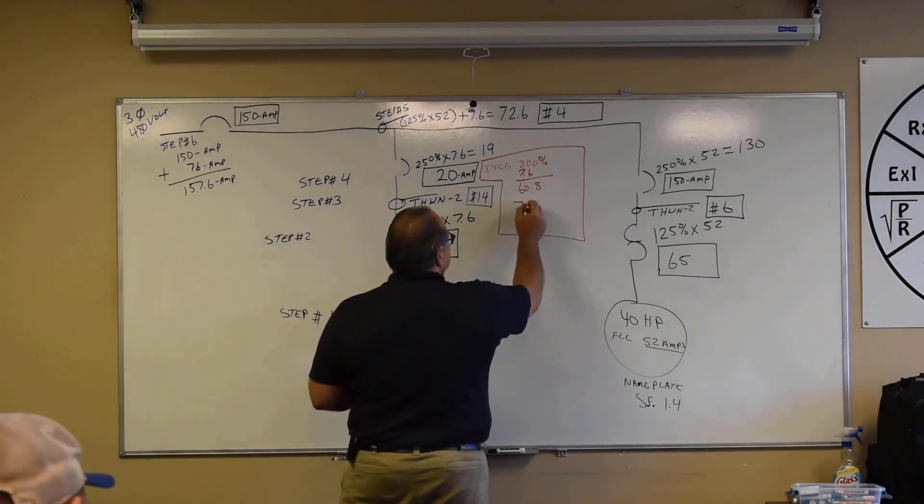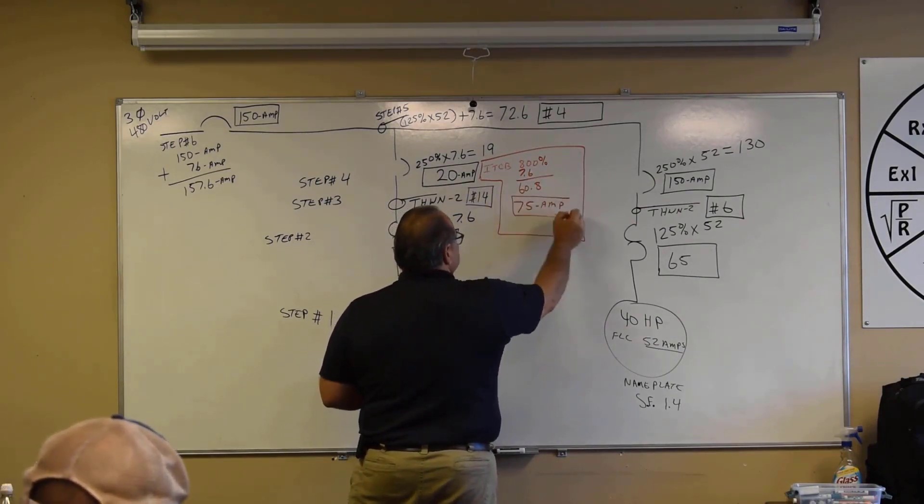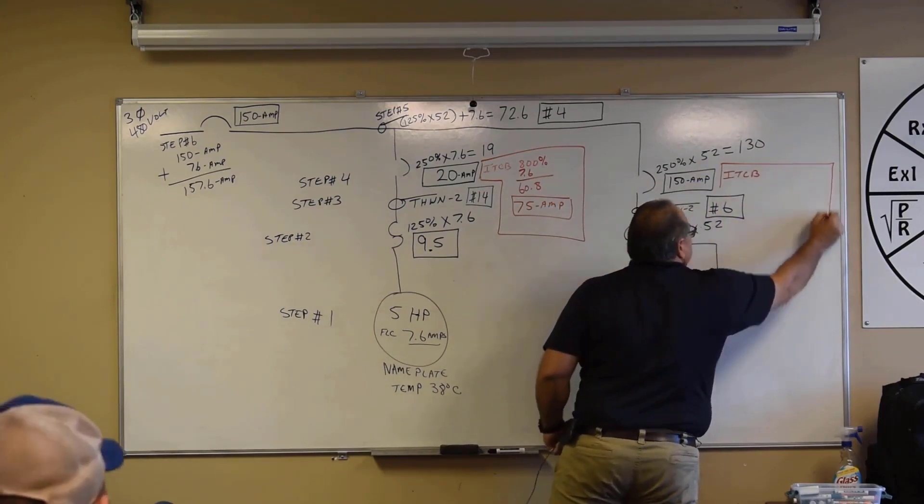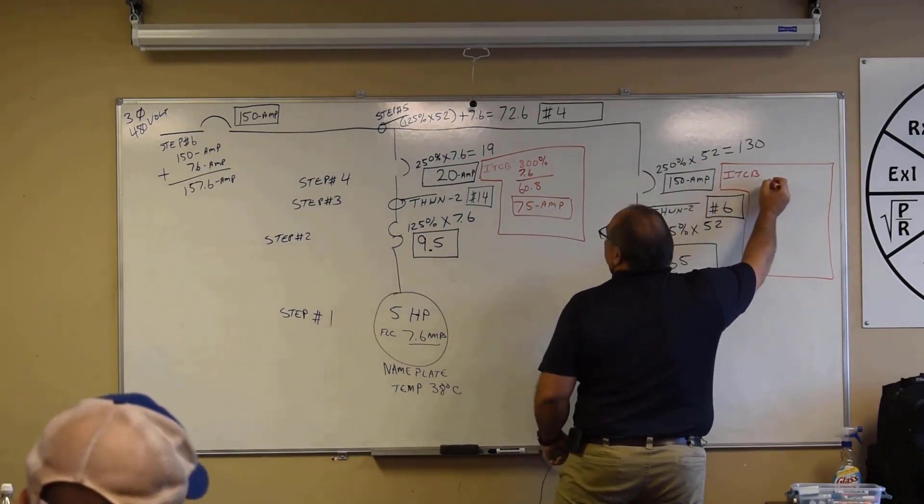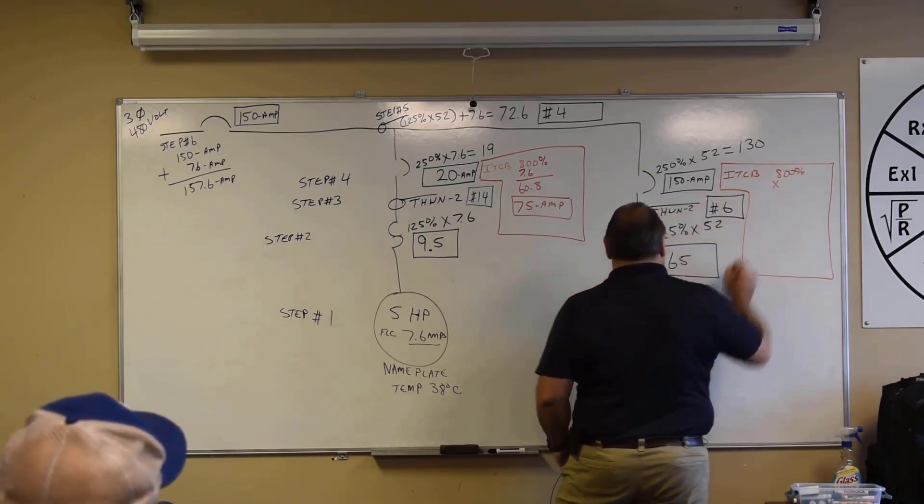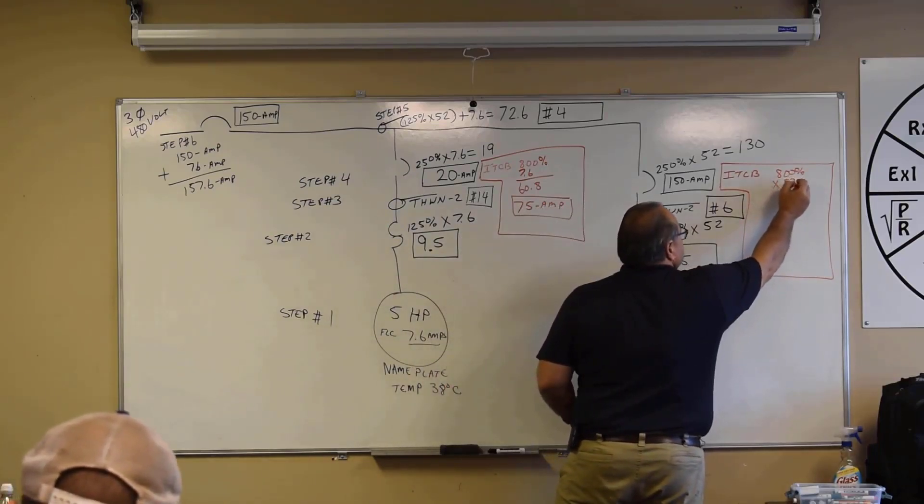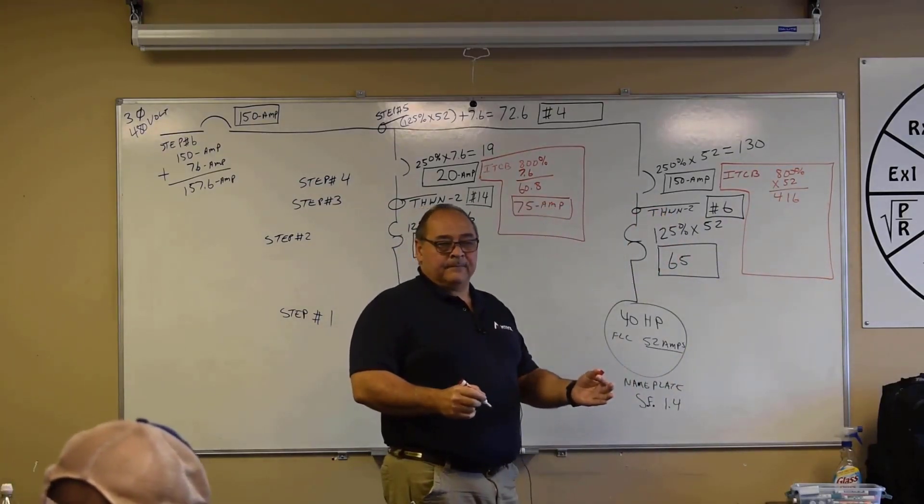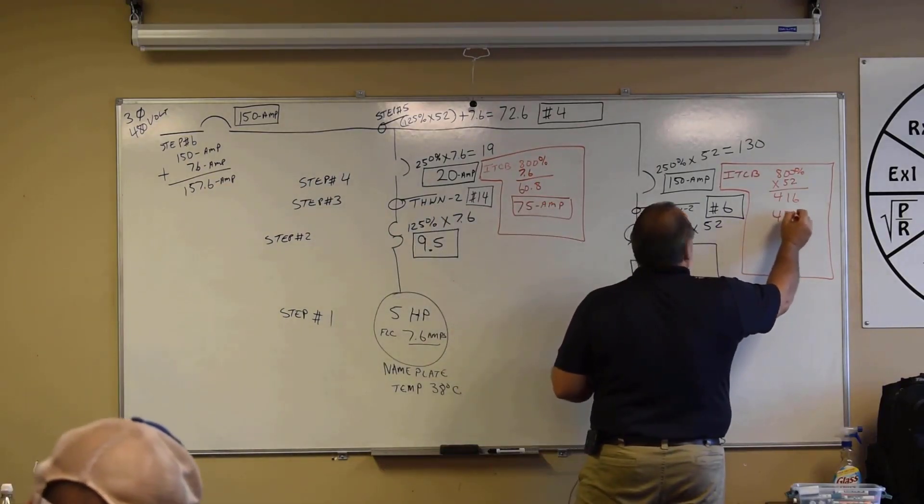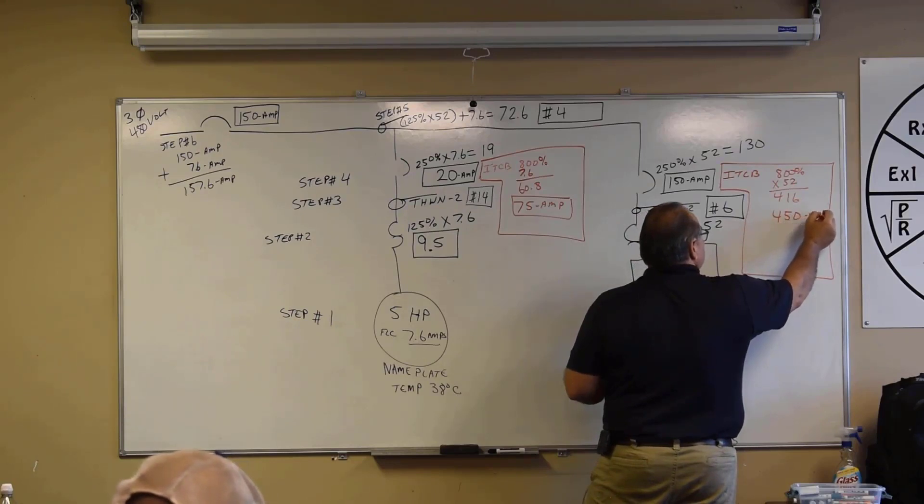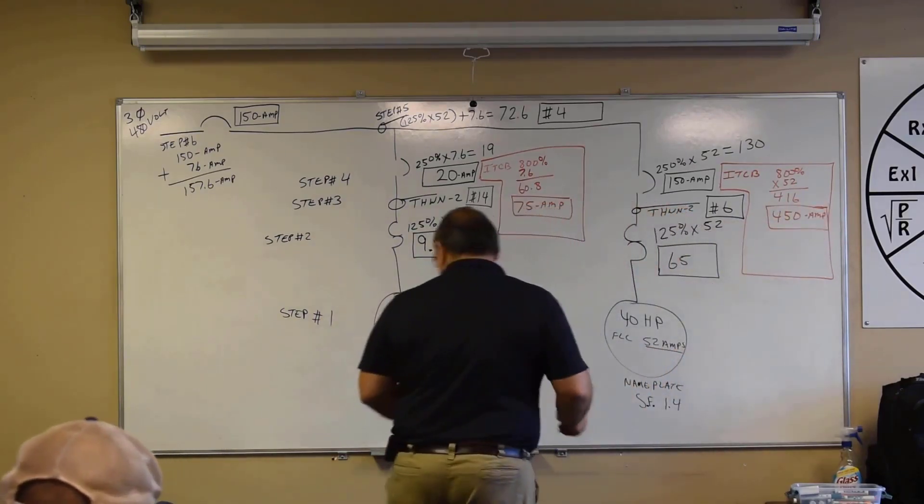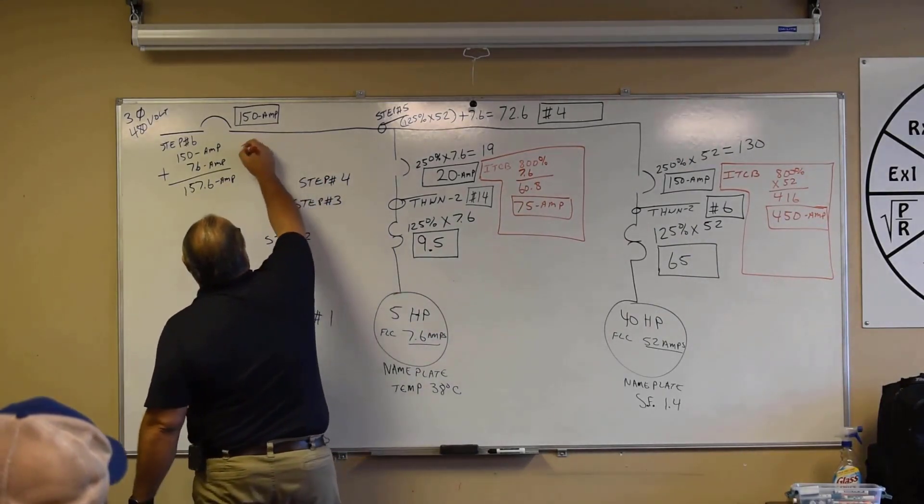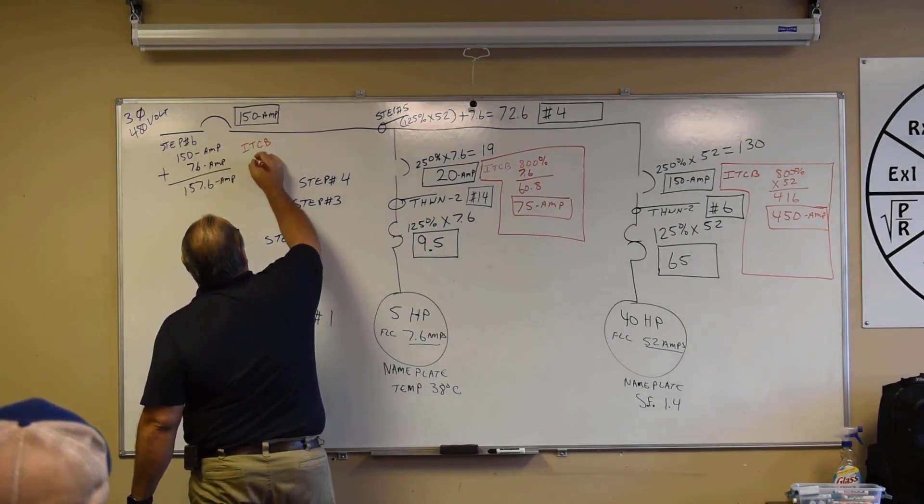Okay, over here we've got instantaneous trip circuit breaker. And again it's 800 percent, and again it's 800 percent, right? Times in this case 52 amps. 416. And we're allowed to go up. What's 416 goes to? 450, right? So 450. And then obviously on step number six, if we took 450 and added 7.6 to it, we can't go up. This one up here is going to be instantaneous trip circuit breaker. It'll also be 450, right?